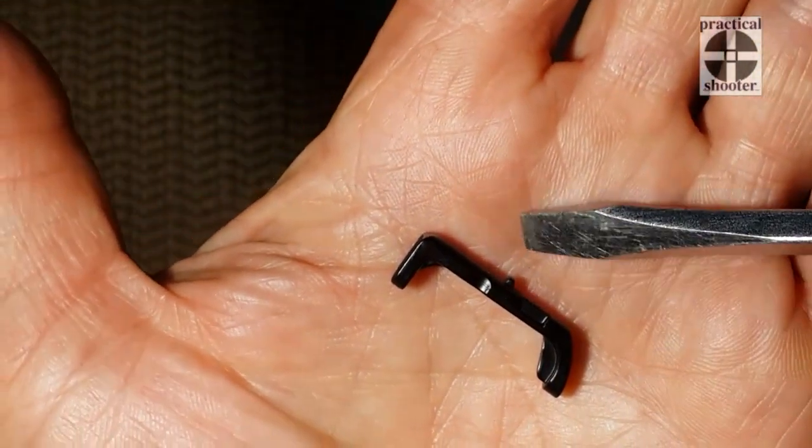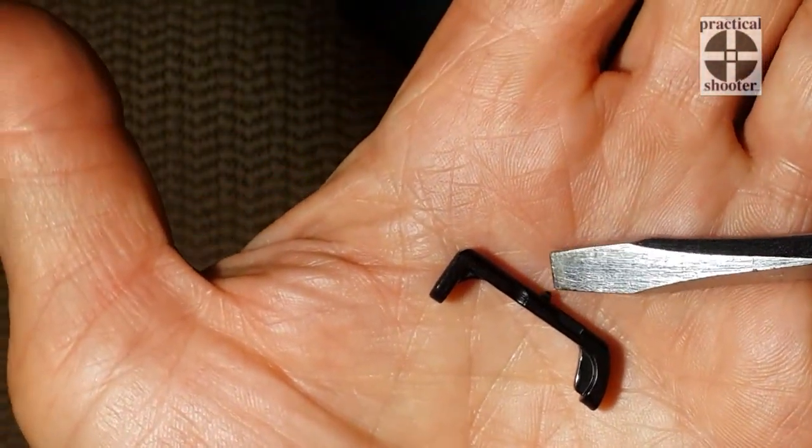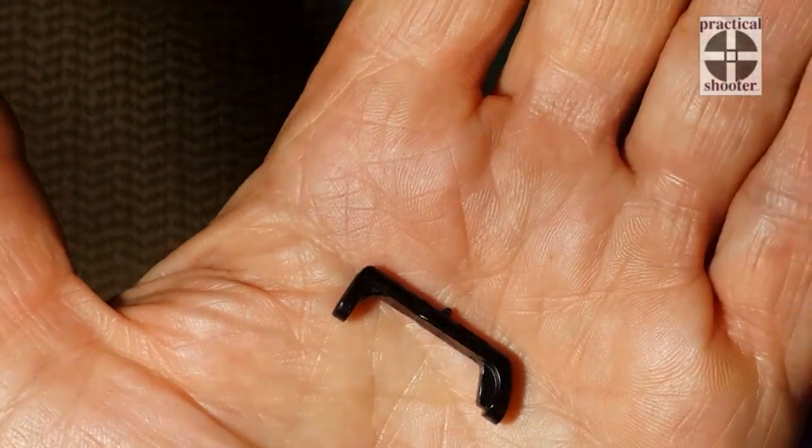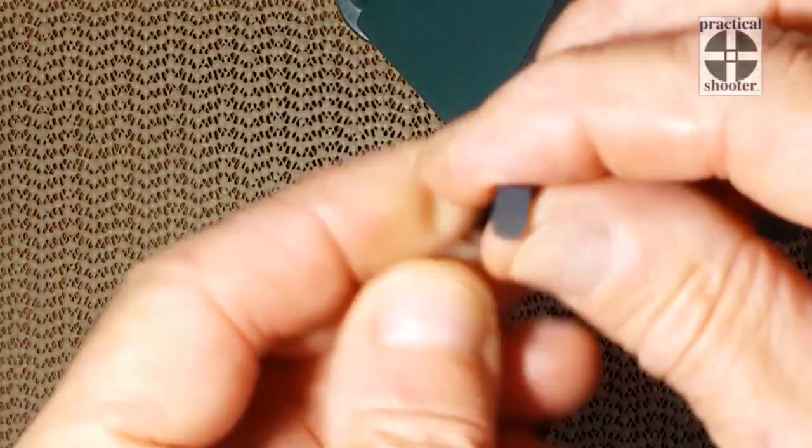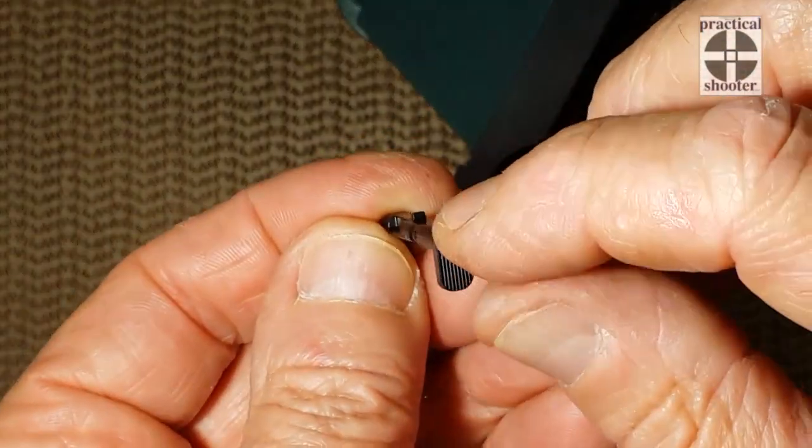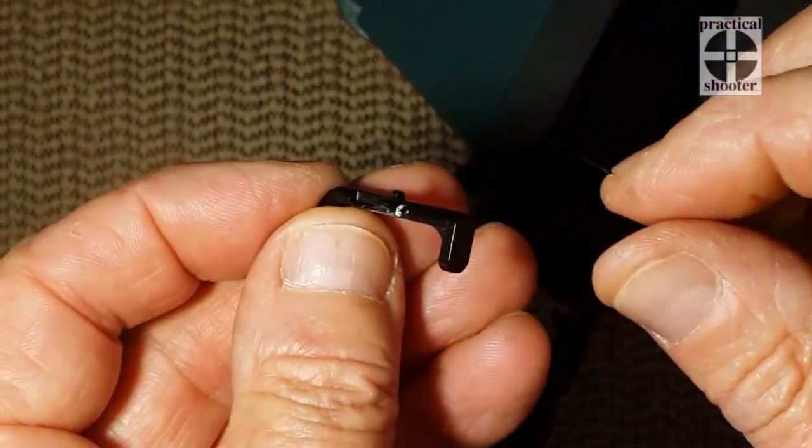So again, that little pin here is what creates all the troubles. To put it back, choose your side carefully where you want the slotted part to be and that is the part you're going to install in the gun first. So I'm going to put it this way in the gun.